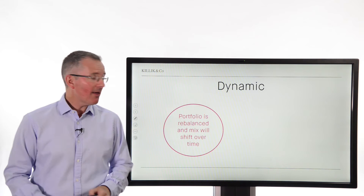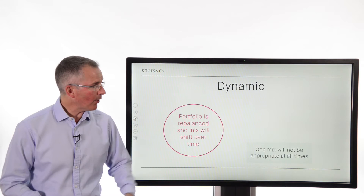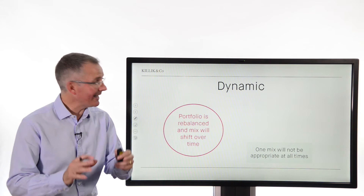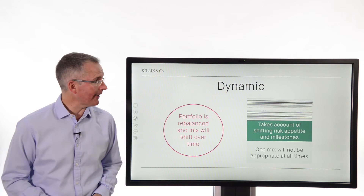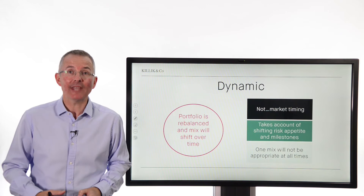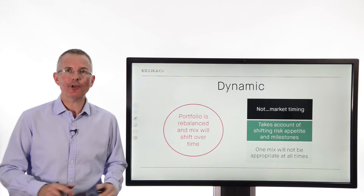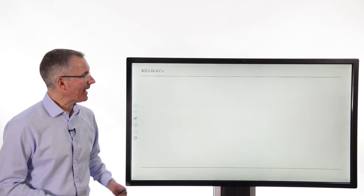And then there's dynamic allocation, which recognizes that over time your portfolio might be rebalanced and the mix might shift. One mix won't be appropriate at all times. The mix you have when you're young may not be the same as the one you want pre-retirement or into retirement. It'll take account of your shifting risk appetite and personal milestones, because they will change. It's not market timing, though — we're not talking about dipping in and out of the market altogether. It's more about taking advantage of the fact that your objectives will shift over time and maximizing your asset allocation accordingly.